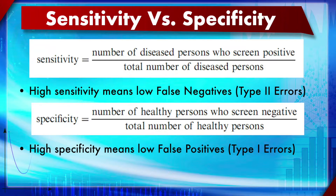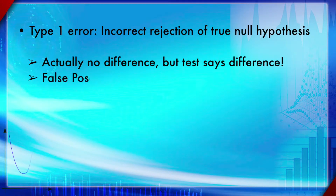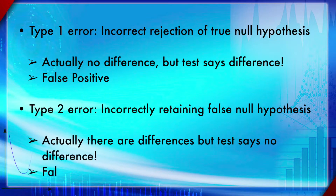High sensitivity means low false negatives, or low Type 2 errors, while high specificity means low false positives, or low Type 1 errors. Type 1 error is the incorrect rejection of the null hypothesis - the test says there is a difference when actually there is none, which is a false positive. Type 2 error is incorrectly retaining a false null hypothesis, which is a false negative.